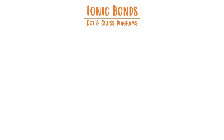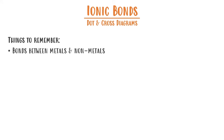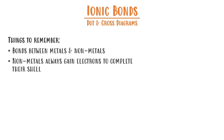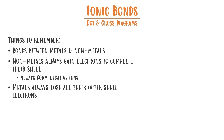In this video we'll be looking at ionic bonds, in particular how to draw dot and cross diagrams. Here are a few things to remember: these will be bonds between metals and non-metals, where the non-metal will always gain electrons to complete the outer shell, therefore forming negative ions. Metals, on the other hand, will always lose all their outer electrons, therefore becoming positive ions.